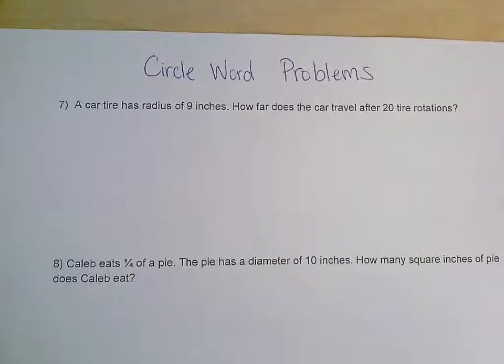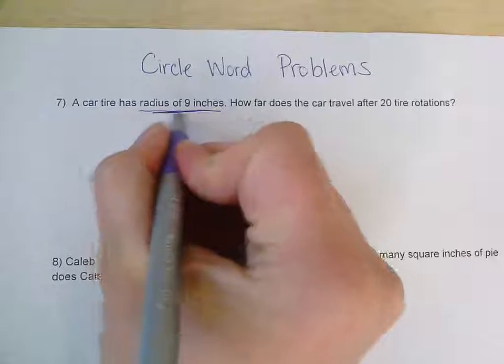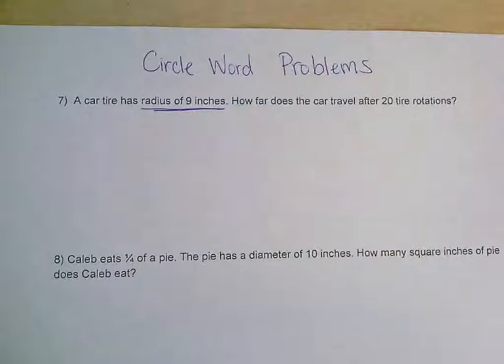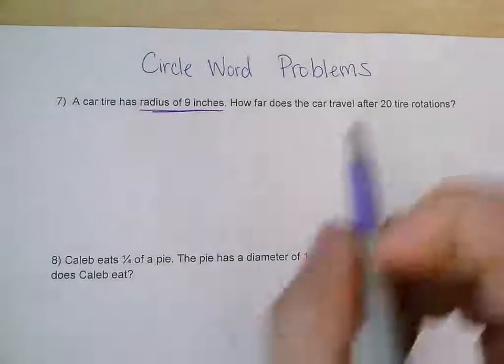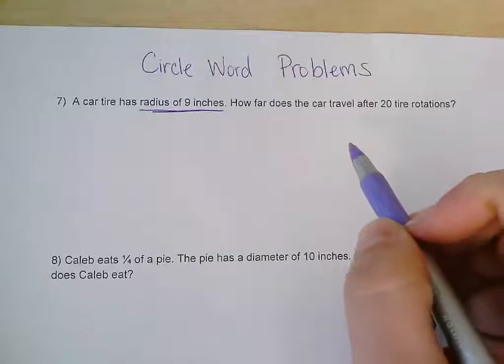Number seven on the backside says a car tire has a radius of nine inches. So I'm just going to underline that there because that's going to be helpful information. Our question is how far does the car travel after 20 tire rotations? That means that the car tire is going to rotate 20 times and I want to know how far we've traveled.